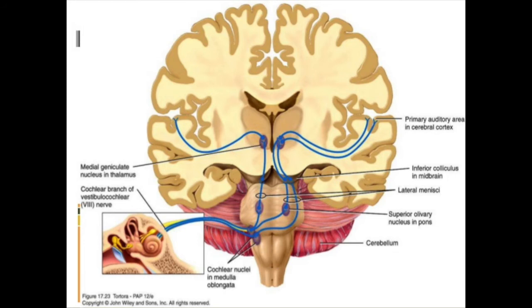The ascending auditory pathway transmits auditory information primarily from the cochlear receptors to the cerebral cortex. Impulses generated in the cochlea pass through the spiral ganglion, where the auditory bipolar cells reside, and along the afferent fibers of the cochlear nerve to the cochlear nuclei of the medulla. From there, neurons project to the superior olivary nucleus at the junction of the medulla and pons. Beyond this, axons ascend in the lateral lemniscus to the inferior colliculi, which project to the medial geniculate nucleus of the thalamus. Axons of the thalamic neurons then project to the primary auditory cortex, providing conscious awareness of sound.